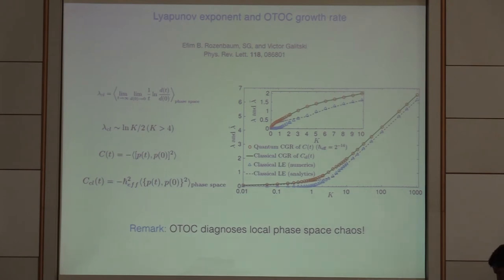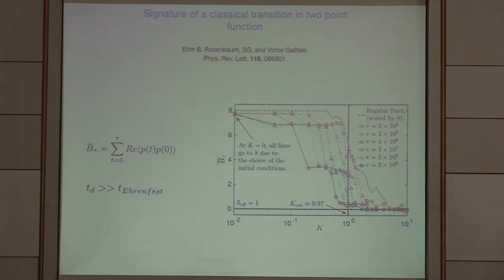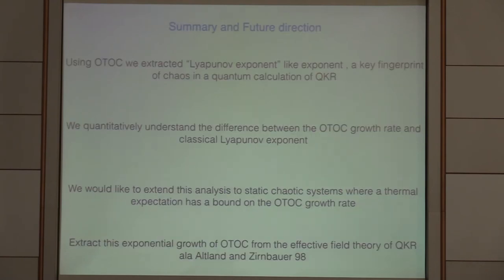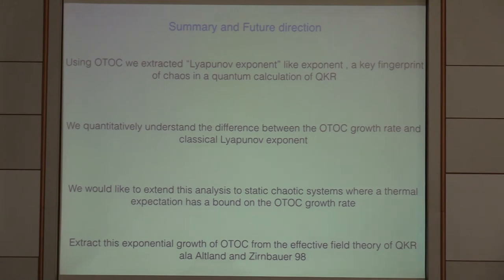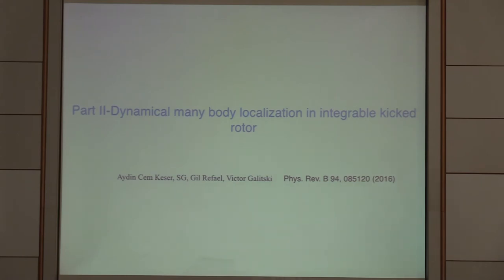To summarize Part 1: using the OTOC, we extracted a Lyapunov-like exponent — a key fingerprint of chaos — from a quantum calculation of the kicked rotor, and we established the fundamental differences between this and the classical Lyapunov exponent. We would like to extend this analysis to static chaotic systems like the billiard model, where thermal expectation averages can be taken and a closer connection to the bound-on-chaos can be made. One could also potentially merge OTOC calculations into the Altland-Zirnbauer effective field theory framework.